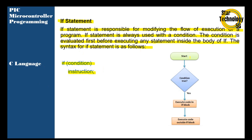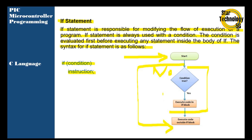In this figure, here is the program start. If the condition is true, it will perform this task. If the condition is not true, it will jump from here to there. If the condition is true, it will execute this block and continue to the next block.